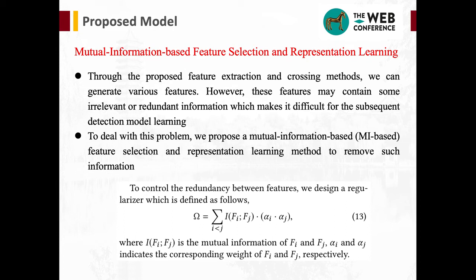The discriminability of an area is measured from two aspects: the number of instances that can be correctly classified in the area, and the reliability of the classification results — defined as the recognition rate and the consistency of the area respectively. Through the proposed feature extraction and crossing methods, we can generate various features. However, these features may contain some irrelevant or redundant information, so we propose a mutual information-based feature selection and representation learning method, with a regularizer defined in equation 13.